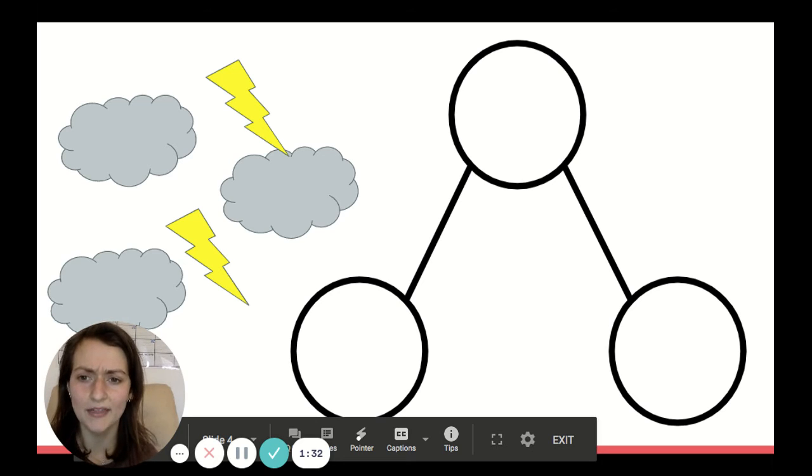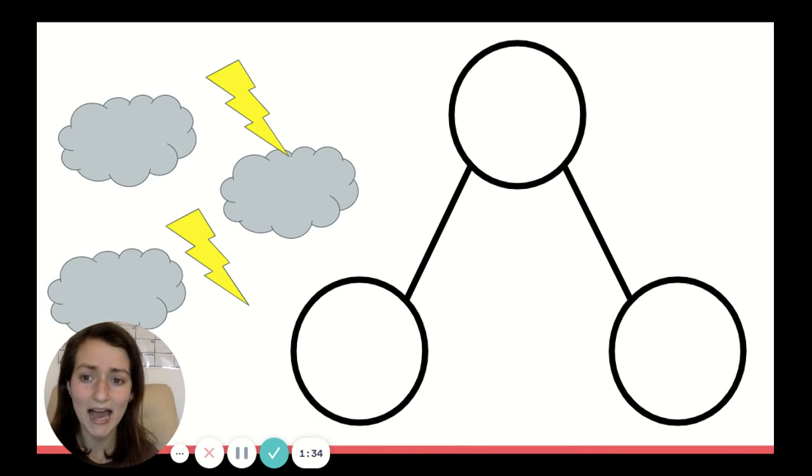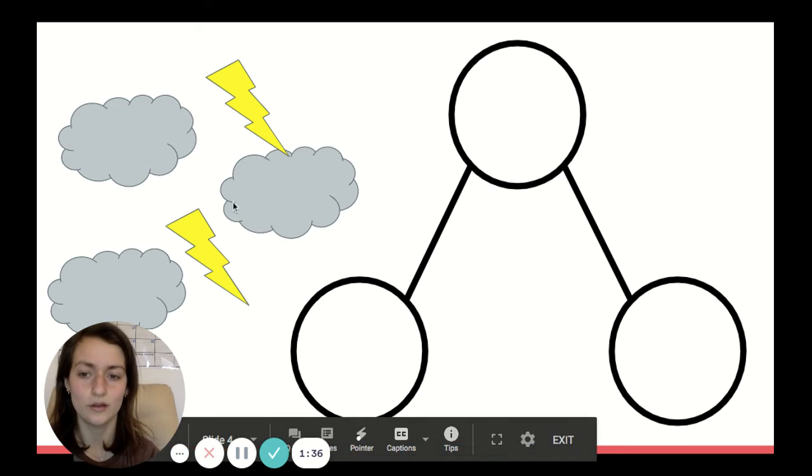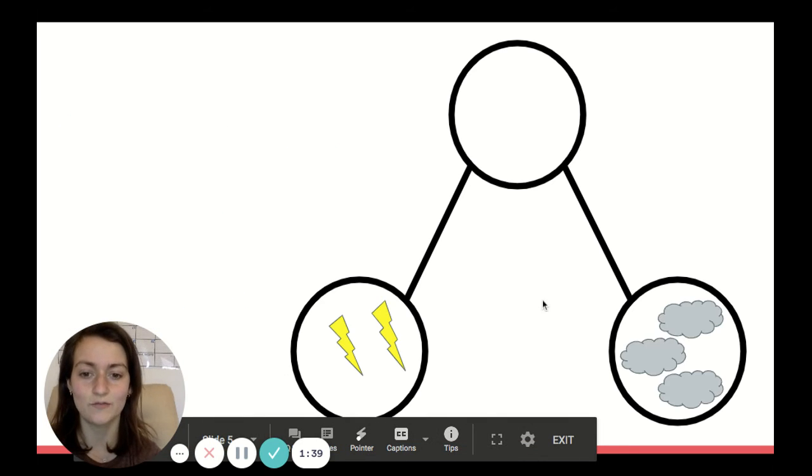And then how many do I have all together? How many objects are in the sky? Well, one, two, three, four, five. Because three and two is five.